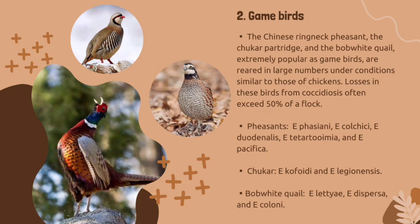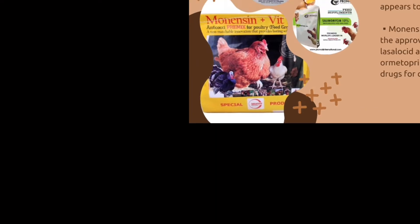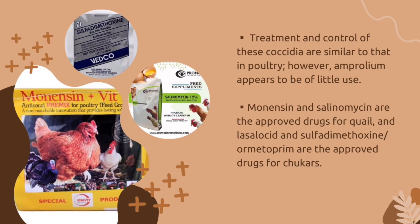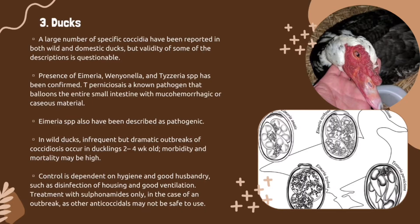Treatment and control of coccidia in game birds are similar to those in poultry. However, amprolium appears to be of little use. Monensin and salinomycin are approved drugs for quail, and lasalocid and sulfadimethoxine are approved drugs for chukars.